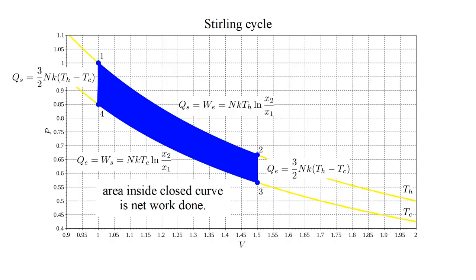Back on the PV diagram, in the segment from state two to state three, we dump heat from the gas to the cold reservoir. This cools the gas and reduces the pressure, which allows us to compress the gas using less work than we obtained from the expansion segment. That's the key to the engine's operation.